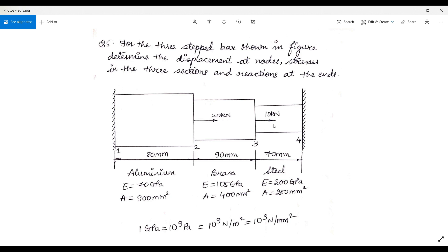There is one small conversion I would like to bring into your notice. 1 GPa is 10 raise to 9 Pa, which is Newton per meter square. If I have to convert this into Newton per mm square, it will be 10 raise to 9 divided by 10 raise to 6, so it becomes 10 raise to 3.